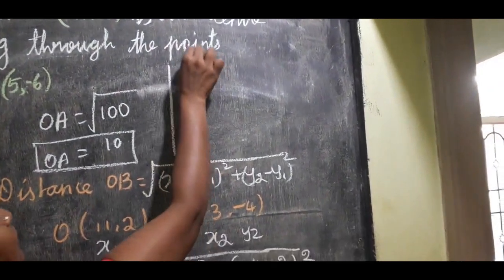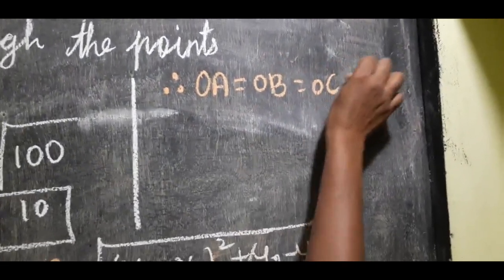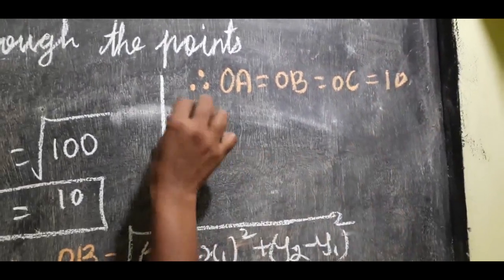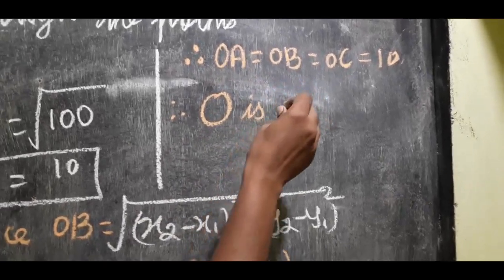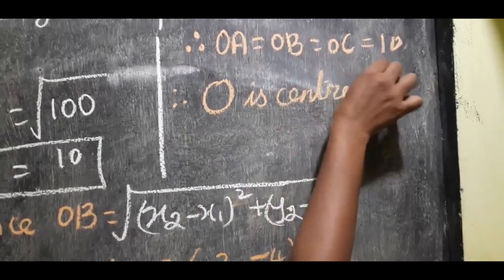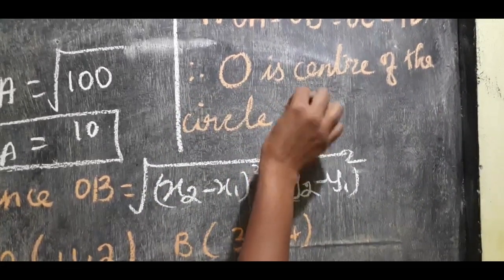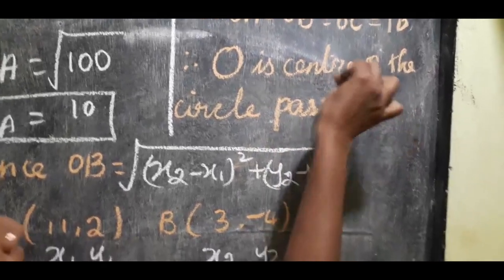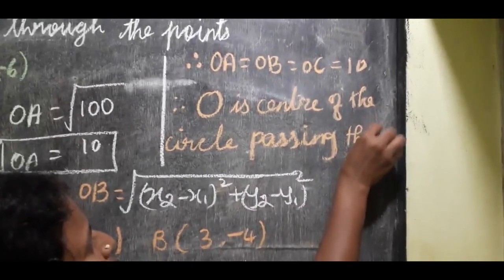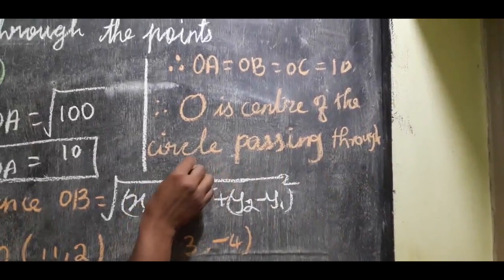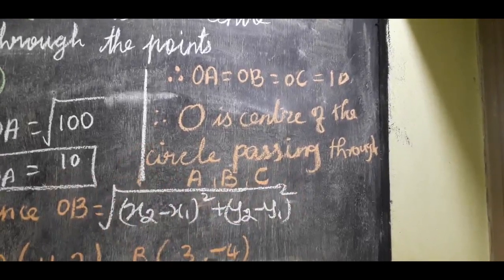Therefore OA = OB = OC = 10. Therefore, the point O(11, 2) is the center of the circle passing through the points A, B, and C.